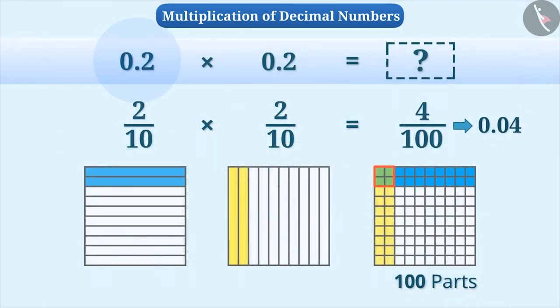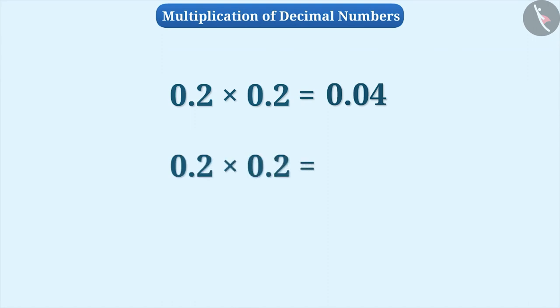Therefore, we can say that 0.2 multiplied by 0.2 equals 0.04. Now you must have understood that 0.2 multiplied by 0.2 is not 0.4 but it is 0.04.